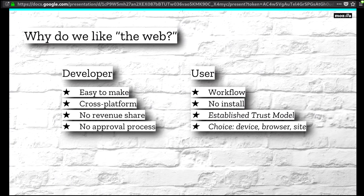We also love that we don't have to install. And these last two points are really important — we're going to focus on them. There's already an established trust model for the internet. We know how to trust it. We put our credit card information in there. We'll put our Social Security tax ID in there. So we trust it. And it's taken us a while to get there, and I'd like to explore that a little bit.